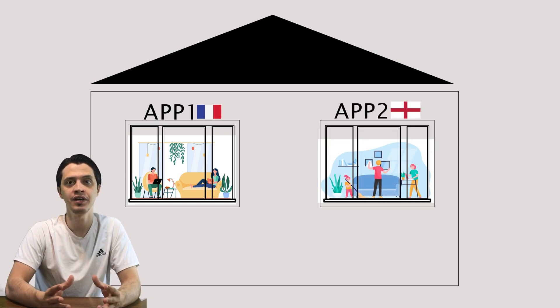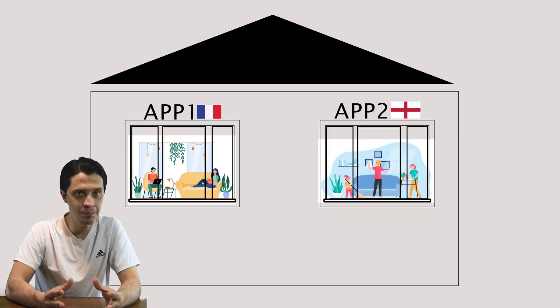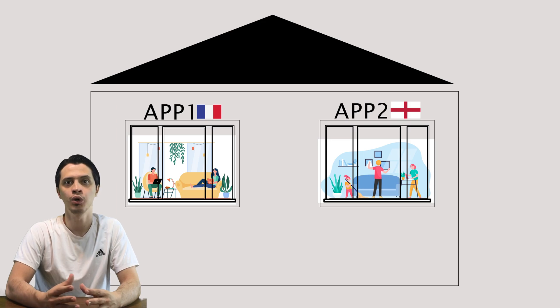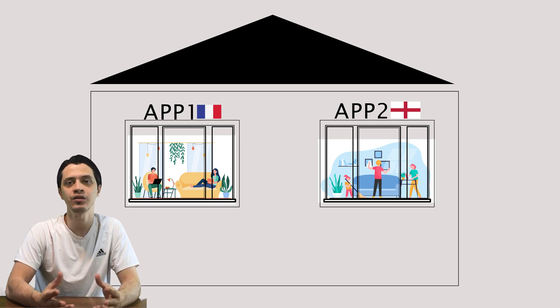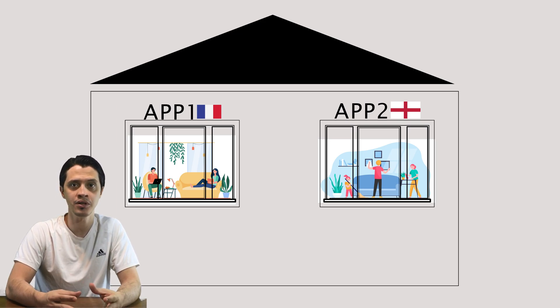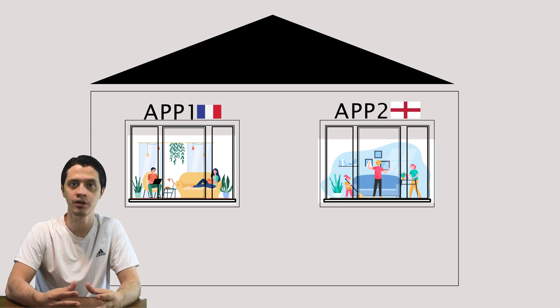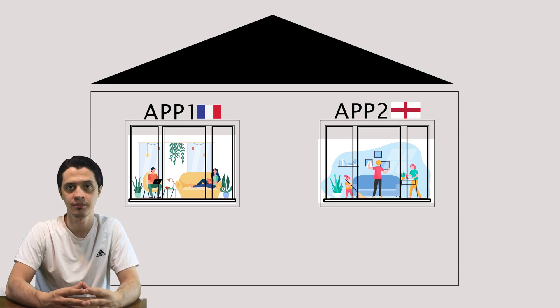What if two apartments living concurrently within the same building want to communicate and share stuff, considering that the apartments might be placed far away from each other or might have residents with different nationalities?